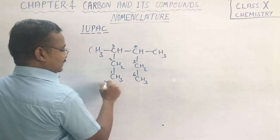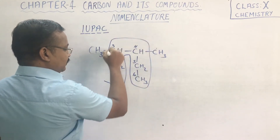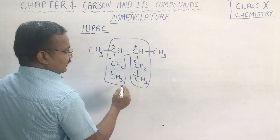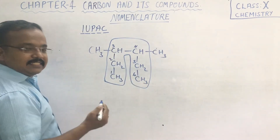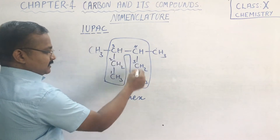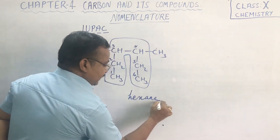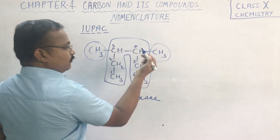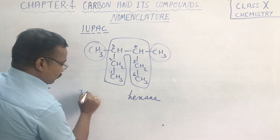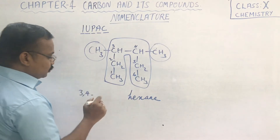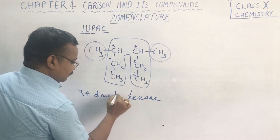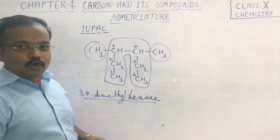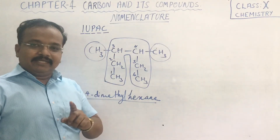Going this way you get the longest chain instead of going straight. Here we get a six-membered chain, so the prefix is 'hex', and since it is a single bond it is hexane. There are two substituents at the third and fourth positions, and there are two methyl groups, so we write it as dimethyl. So 2,3-dimethylhexane is the name of the compound.